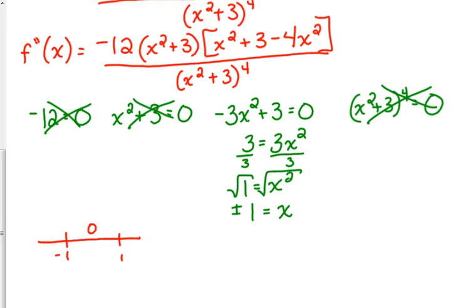Those terms can never equal 0 because negative 12 doesn't equal 0, and x squared plus 3 — you're squaring a number which is positive and adding 3, so that's never going to equal 0. And if you raise that to the fourth, it's still not going to equal 0.